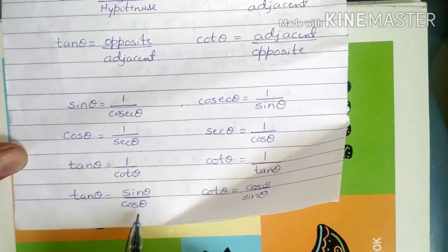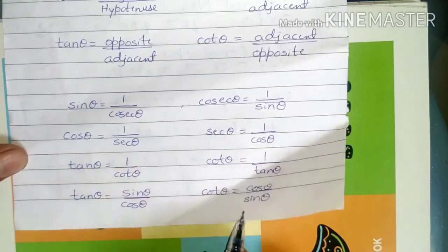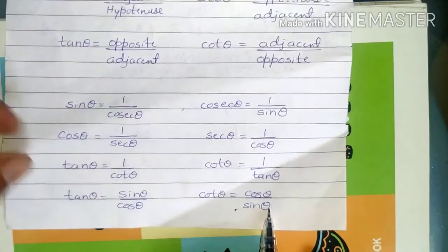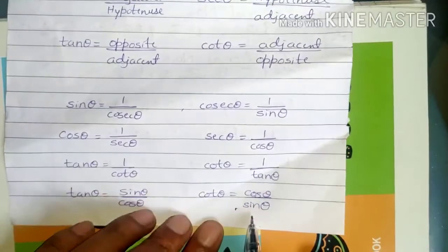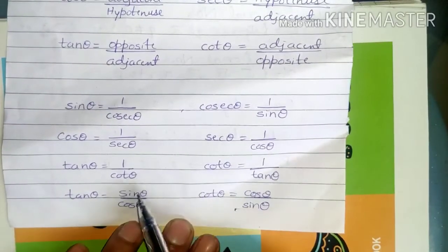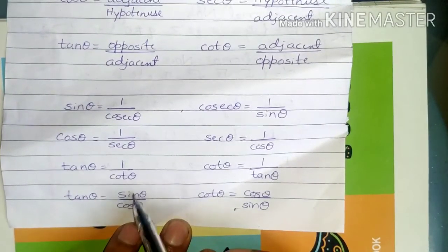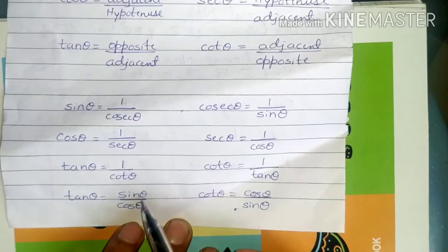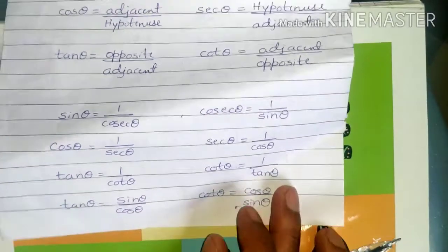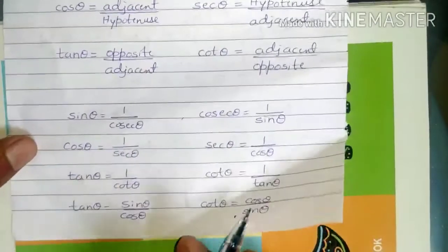Tan theta is equal to sin theta by cos theta — remember this one. Also, cot theta is equal to cos theta divided by sin theta. These concepts you have to remember.